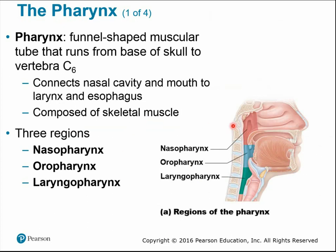The pharynx is just the technical term for the throat — a muscular tube running from around the base of the skull to the C6 vertebra, connecting the nasal cavity and mouth to the windpipe and esophagus. It's composed of skeletal muscles, meaning you have conscious control — when you swallow, you consciously use those muscles. The three regions of the pharynx are the nasopharynx (back of the nasal cavity), the oropharynx (connected to the oral cavity), and the laryngeal pharynx (below, near the larynx).